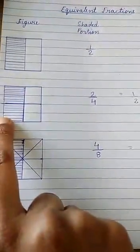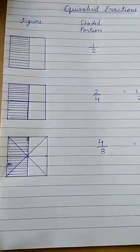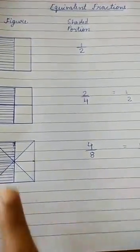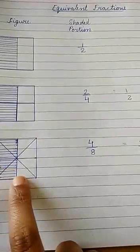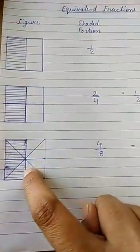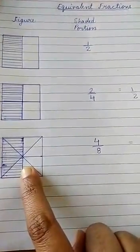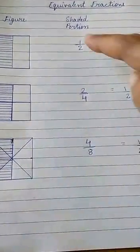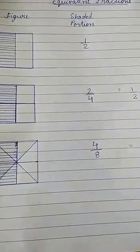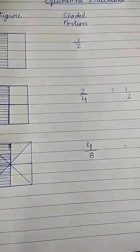It has total four parts, but two parts are shaded and two parts are not shaded. In the third figure, total eight parts are there, from which four parts are shaded and four parts are not shaded, which means that all the figures have equal parts shaded and equal parts not shaded.